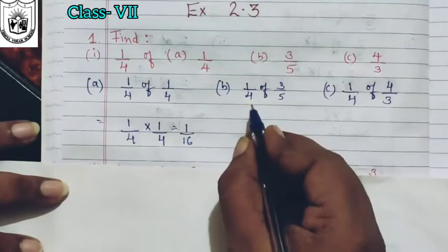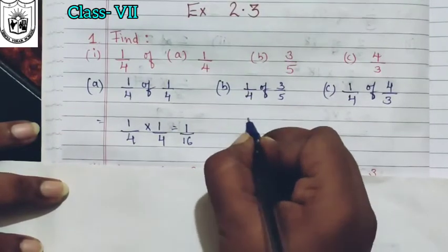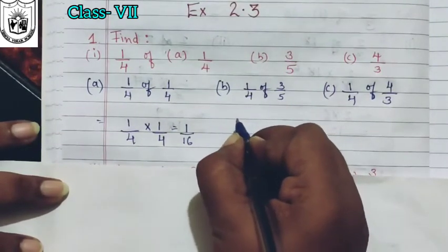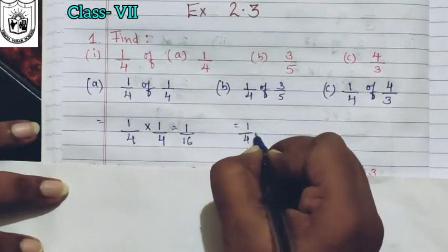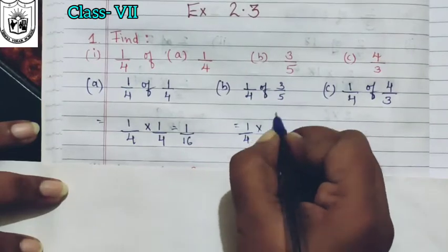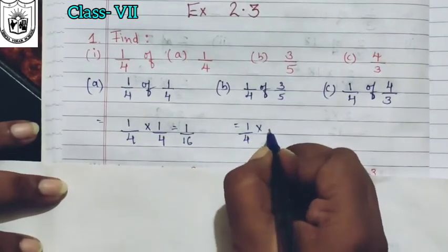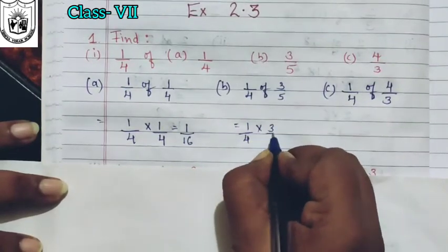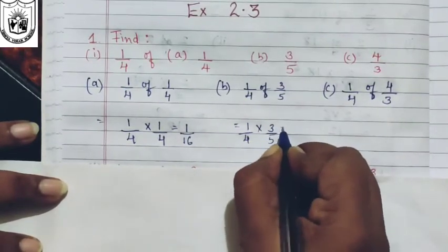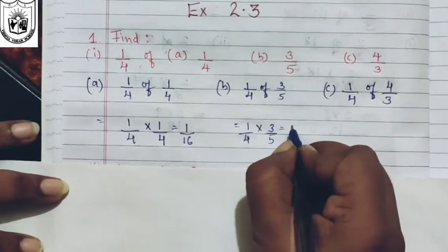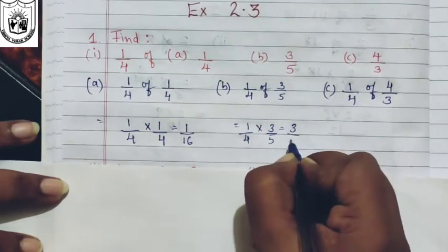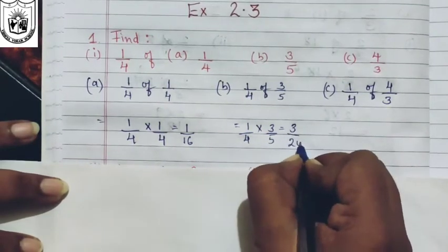Let us solve the second one: one-fourth multiplied by three-fifth. So your answer here will be three on top — three — and four times five are twenty. So the answer is 3/20.